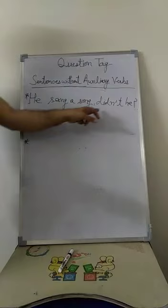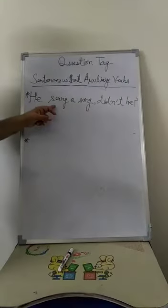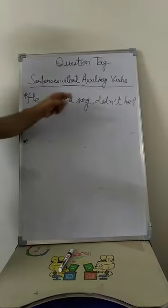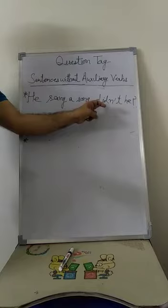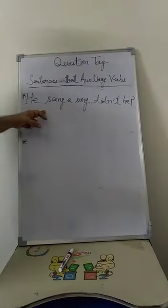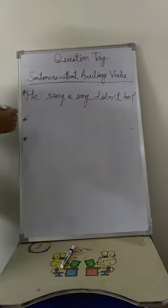He sang a song, didn't he? Here second form of the verb has been used. Wheresoever second form of verb is used, we will use helping verb 'did'. Since it is a positive statement, the question tag is in negative. One more example.